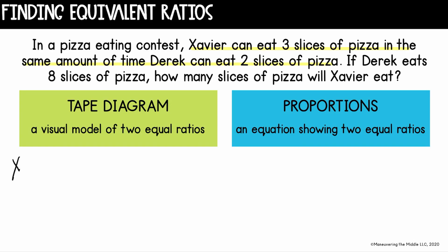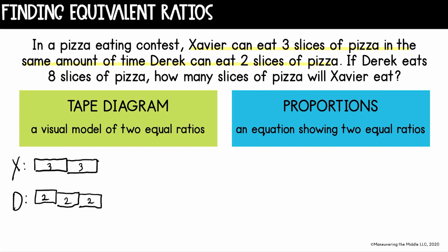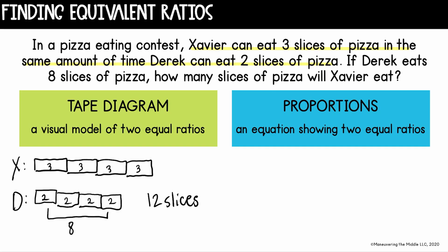We're comparing Xavier and Derek. I'm going to show you a tape diagram, which is just a visual picture, and then I'll show you how to solve it with a proportion. Xavier is going to eat three slices and Derek in the same time is going to eat two. We want to know how many pieces Xavier will eat if Derek eats eight. Keeping the tape ratio going — Derek's eating two more, that means Xavier ate three more, and so on until Derek has eaten eight. Then I can count up and see that in the same amount of time, Xavier ate 12 slices.